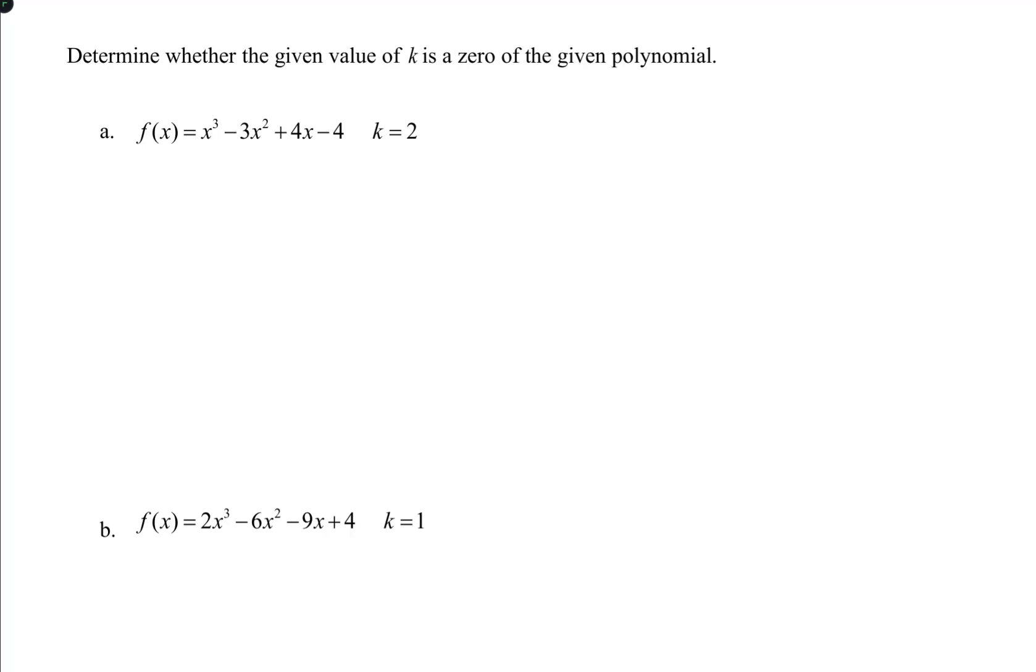Determine whether the given value of k is a zero of the given polynomial. To determine if this value is a zero, we have to evaluate the polynomial at that value and see if it happens to equal zero.